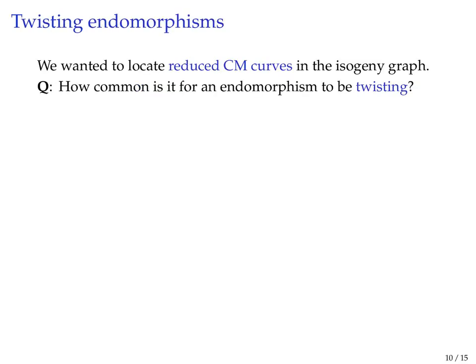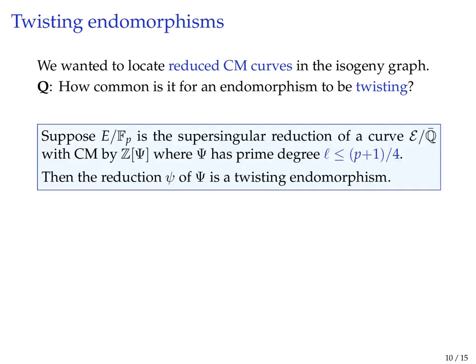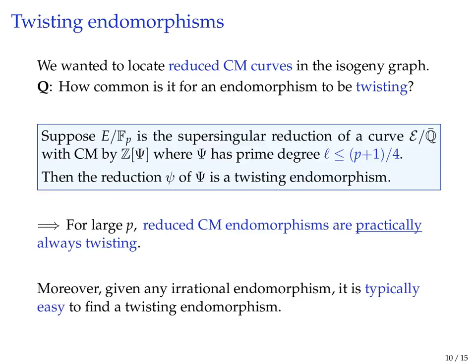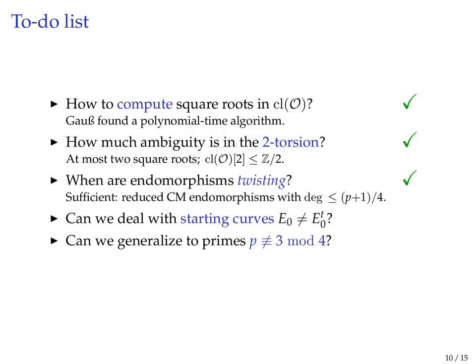Let's talk about twisting endomorphisms. Recall our goal was to locate reduced CM curves in the isogeny graph. How common is it for an endomorphism that comes from reducing a CM curve to be a twisting endomorphism? We got the following theorem: if the CM this curve has is by an endomorphism of prime degree L smaller than about p to the quarter, then the reduction is guaranteed to be a twisting endomorphism. Yes, there is a restriction, but for cryptographic purposes p is so massive that you can't even write down these curves for larger L. So practically speaking, reduced CM endomorphisms are always twisting for the cases we care about. Moreover, if they aren't, it's typically easy to find a twisting endomorphism if you're given any irrational endomorphism.